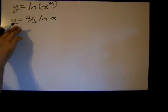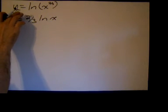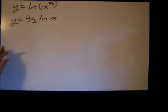So y equals two-thirds times ln of x is an equivalent expression to y equals ln of x to the two-thirds.